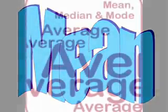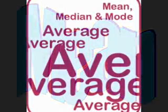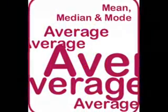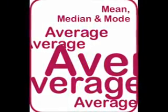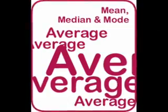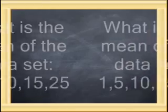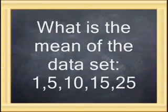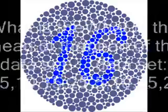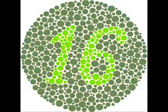Let's start with the mean. The mean is basically the average of the data set. You simply add all the numbers together and divide by the total number. What is the mean of this data set? You guessed it — it's 16.